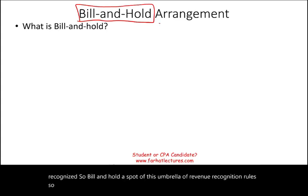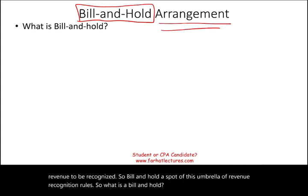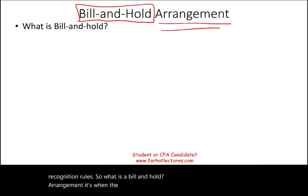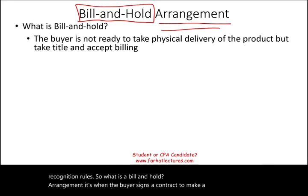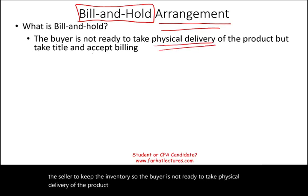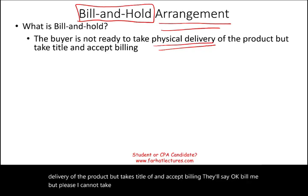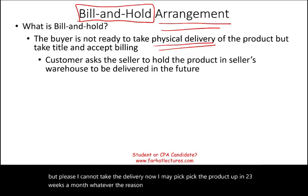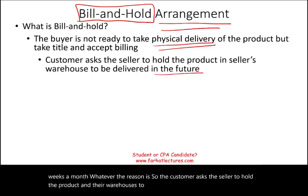So what is a bill and hold arrangement? It's when the buyer signs a contract to make a purchase but asks the seller to keep the inventory. The buyer is not ready to take physical delivery of the product but takes title of and accepts billing. They say, bill me, but I cannot take the delivery now — I may pick the product up in two or three weeks, a month, whatever the reason is. So the customer asks the seller to hold the product in their warehouses to be delivered in the future.